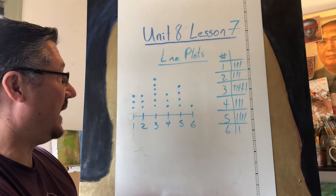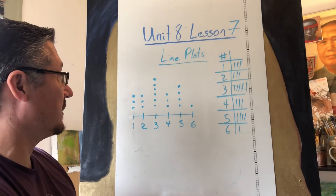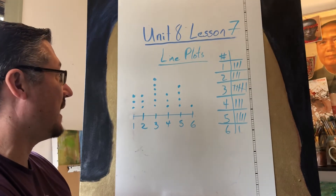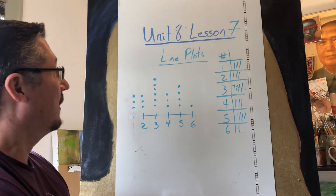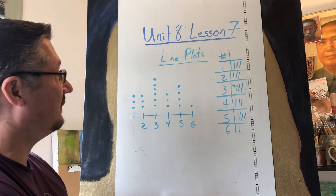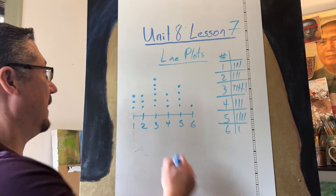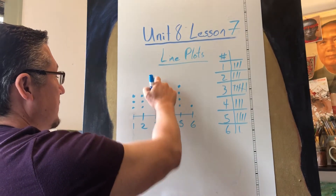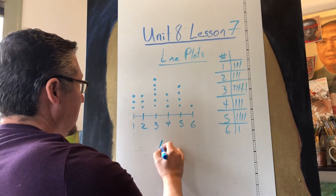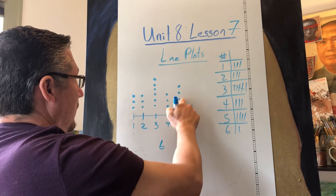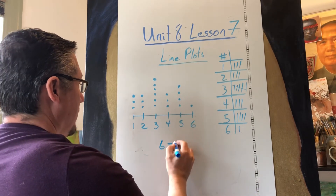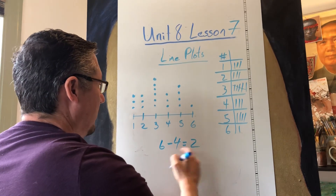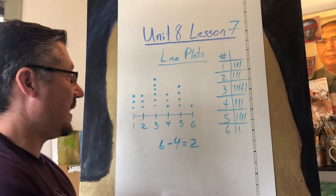They're going to ask you some questions. How many more times did I roll three than five? Well, three I rolled six times, five I rolled four times. So I rolled two more times. It's a very simple lesson.